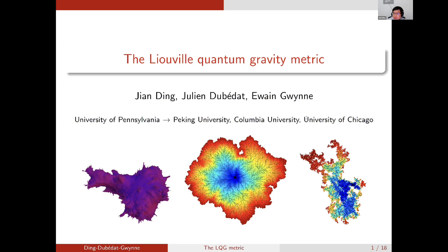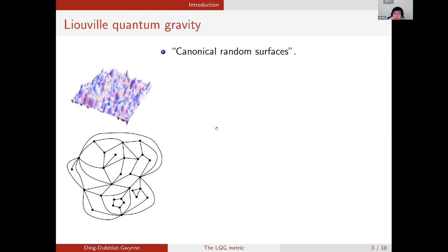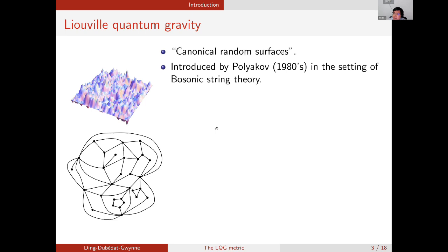Thanks for the introduction. It is an honor to be invited to speak at ICM 2022, and even more so when the invitation is with my friends and colleagues Julien Dubeda and Yun Guine. Today we will give a joint talk which aims to review recent progress on a random metric of Liouville quantum gravity. Let me first start by introducing what is Liouville quantum gravity. Roughly speaking, Liouville quantum gravity is a random surface model chosen in a certain canonical way. It was introduced by Polyakov in the 1980s in the context of bosonic string theory.